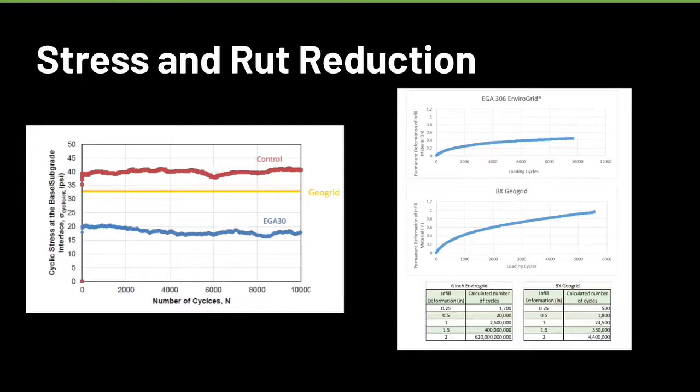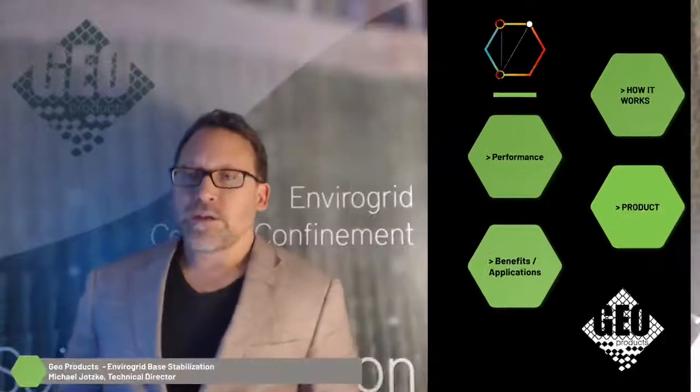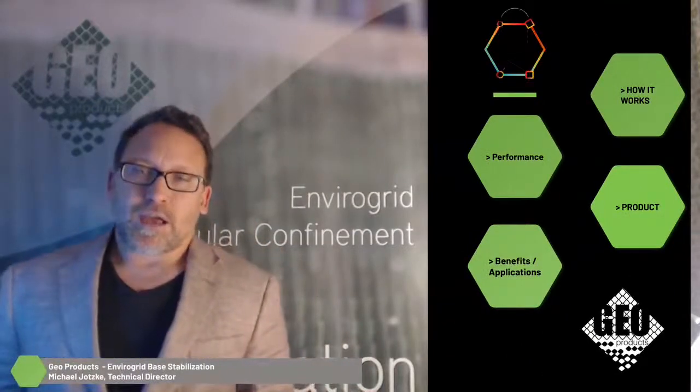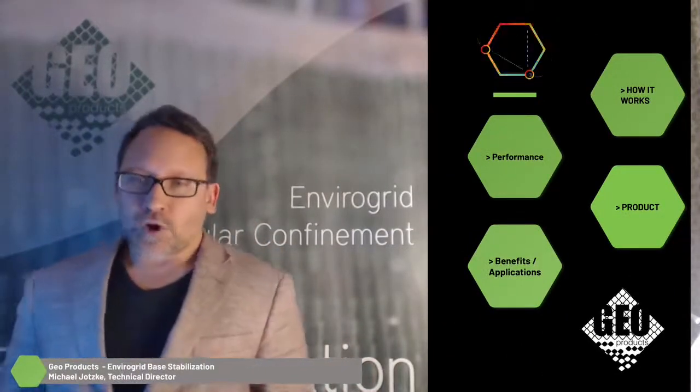On the right side here, just for an example, to get to one inch of rut for an EnviroGrid system, you would need over or close to 2.5 million passes to get to that. Whereas, with a system that has a BioxioGrid, about 24,000 passes, you would be at one inch of rut depth. Huge benefit in being able to utilize the GeoCell versus a two-dimensional product.